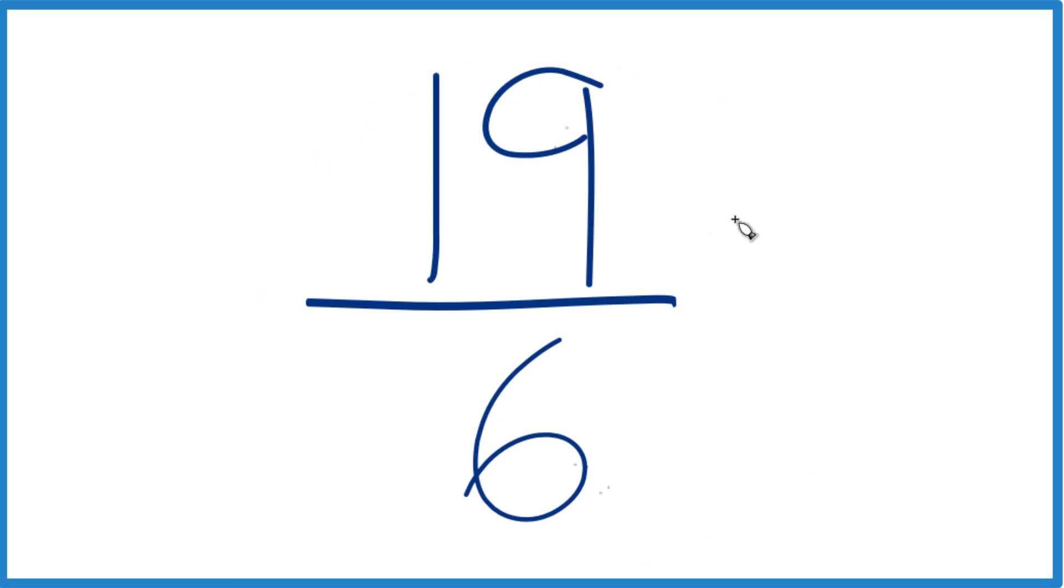We're looking for a whole number that goes evenly into 19 and 6, but the only whole number that's going to go into 19 and 6 evenly is 1. So if you divide 19 by 1 and 6 by 1, 1's our common factor, you get 19/6.